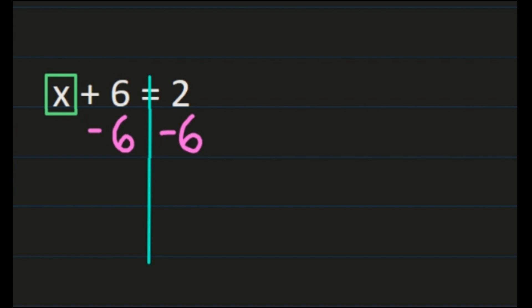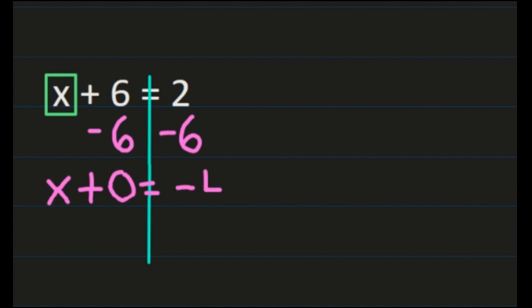On the left-hand side, I haven't done anything to x — it stays exactly how it is. I have positive 6 minus 6, so 6 minus 6 is 0, giving us x plus 0 equals. On the right-hand side, I have 2 minus 6. We apply our integer rules: adding integers with different signs means we subtract — 6 minus 2 is 4 — and we keep the sign of the larger absolute value, which is the negative 6. So x plus 0 equals negative 4, which simplifies to x equals negative 4.